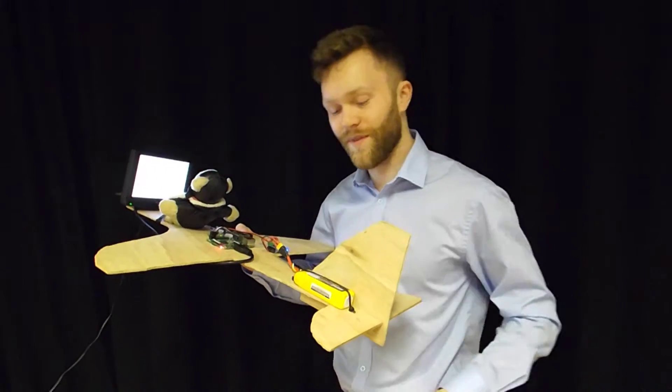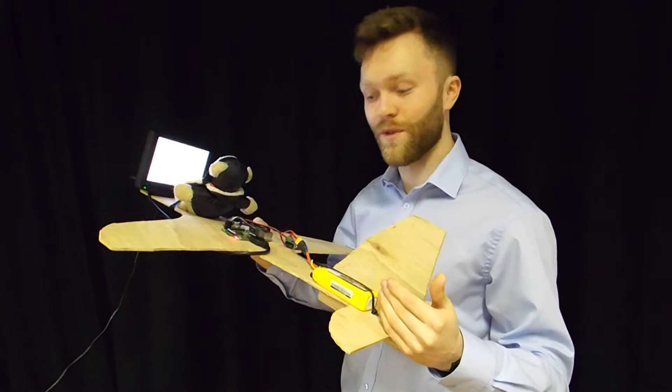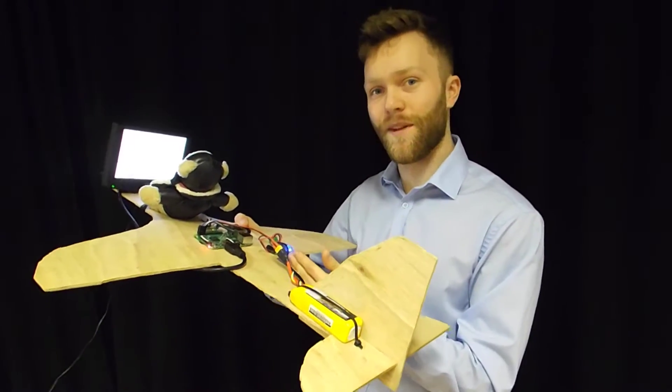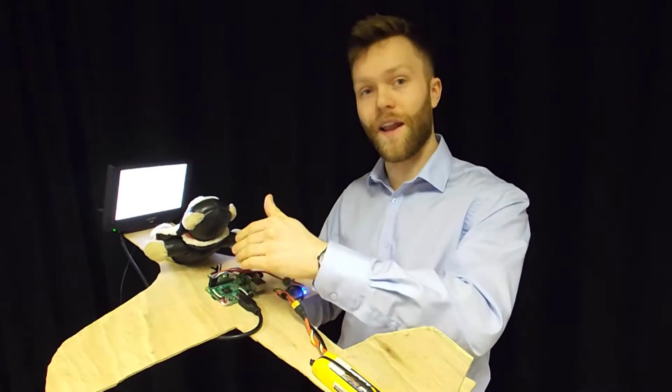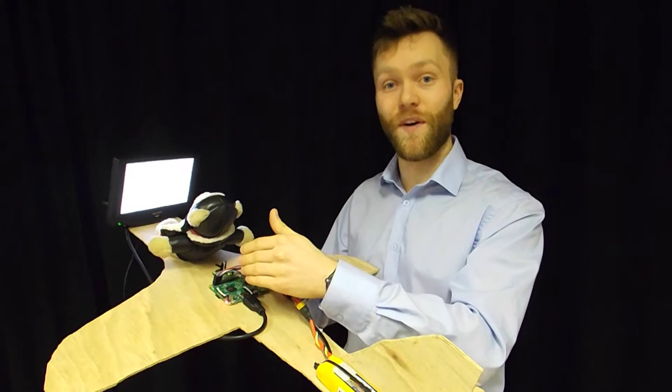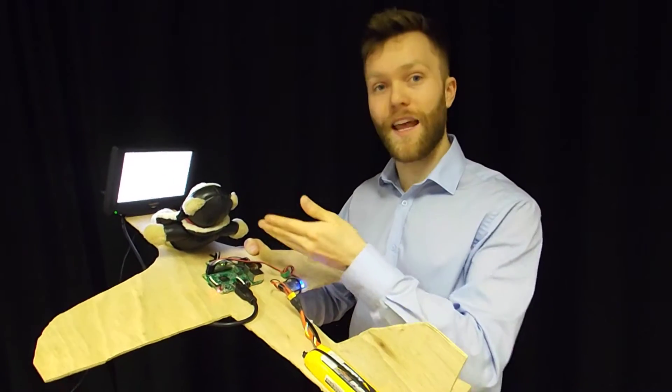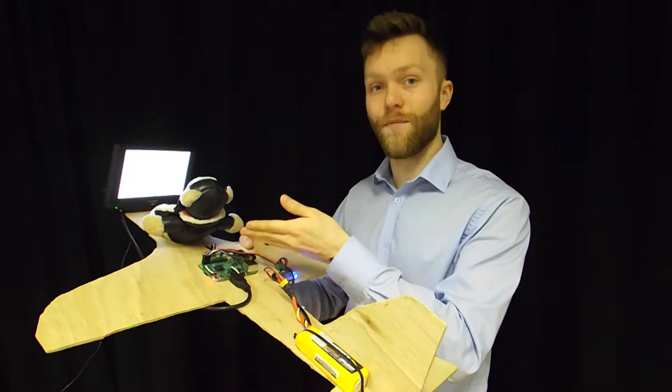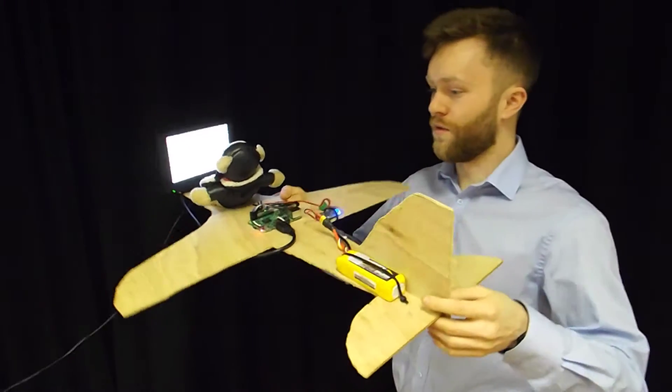So let's take a tour of the hardware. First of all, there's the lithium polymer battery which is providing a 12V supply to the battery eliminating circuit, the BEC, which is then feeding the Raspberry Pi with 5V inputs into the GPIO. The Raspberry Pi is then powering the IMU or Inertial Measurement Unit from where we get the roll, the pitch and the yaw as well as heading and X, Y and Z accelerations of the aircraft.